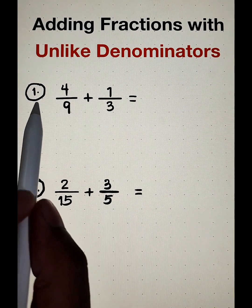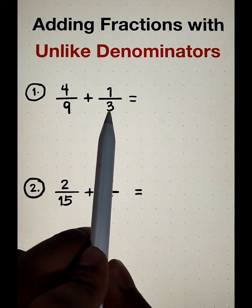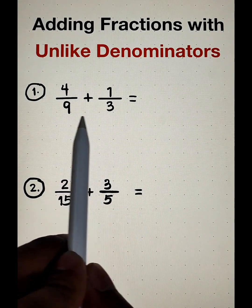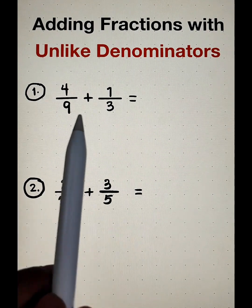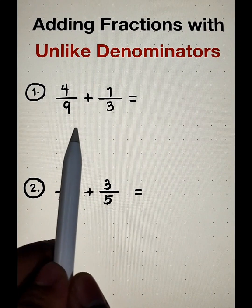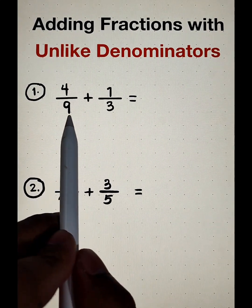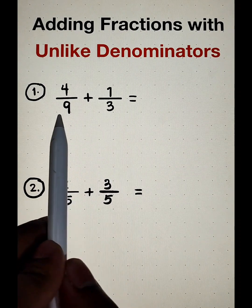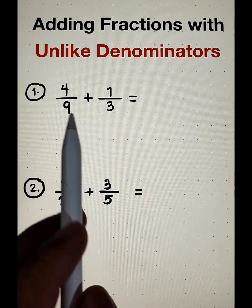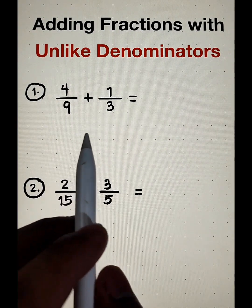What we have here in number 1 is 4 over 9 plus 1 over 3. Now, these fractions cannot be added directly because they have different denominators. Remember, we can only add fractions directly if they have like denominators or same denominator. So in this case, what we need to do is to find first the LCD.